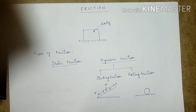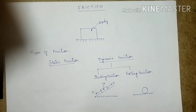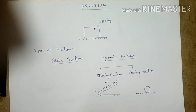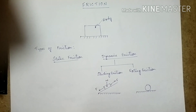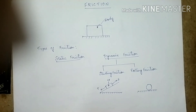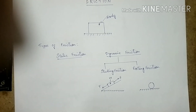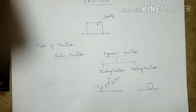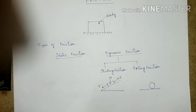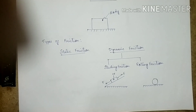Hello everyone. Today we'll discuss friction. When a body moves or tends to move over another body, a force opposing the motion develops at the contact surface. This force which opposes the movement or tendency of movement is called frictional force, or simply friction. Friction can also be defined as the property due to which the motion of one body relative to another is resisted.